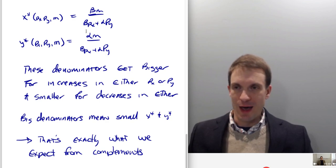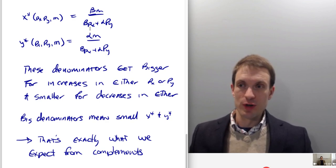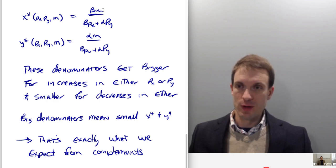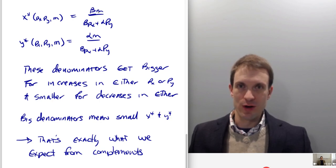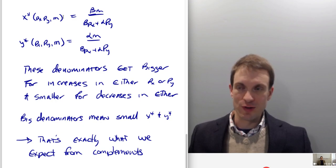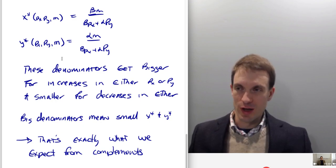Going back to our definition of a normal good: a normal good is one where as income rises, demand increases as well. Just take the partial derivative of the right-hand side with respect to income. Because income appears in the numerator, that's not a very difficult derivative — it's going to be positive — and that tells us this is a normal good. Same for y.